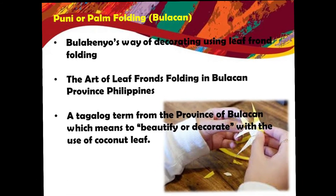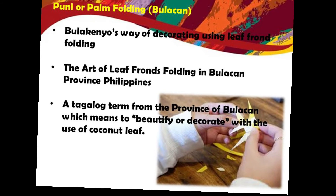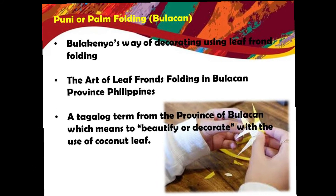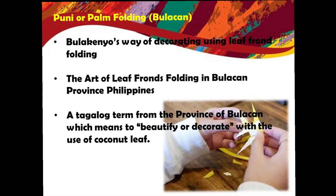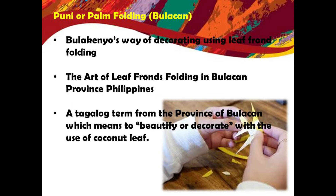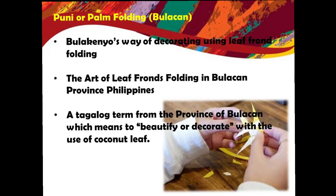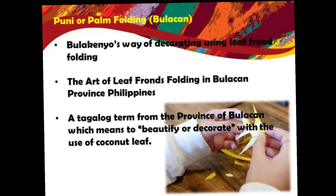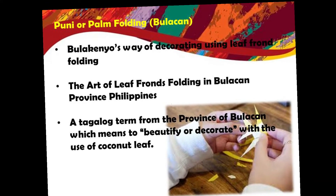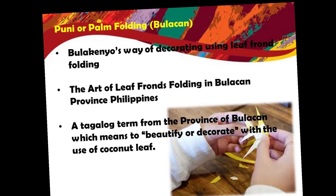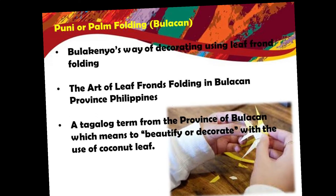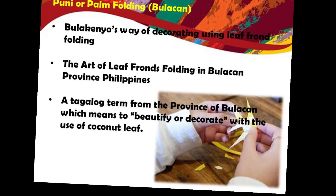The first one is puni or palm folding. It is the Bulacan way of decorating using leaf frond folding, and it is the art of leaf frond folding in Bulacan Province, Philippines. Puni is a Tagalog term from the province of Bulacan which means to beautify or decorate with the use of coconut leaf. Coconut leaves are fashioned by folding, plaiting, braiding, and simple weaving, which may have functional as well as aesthetic uses.